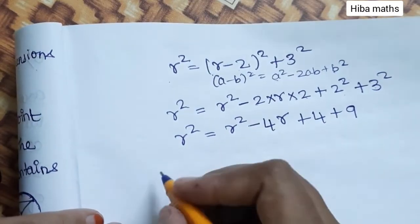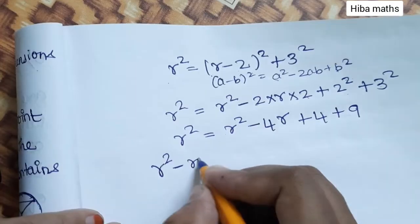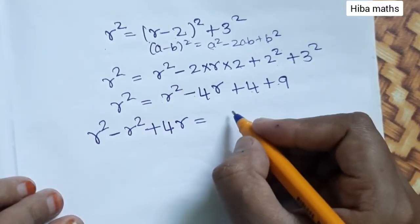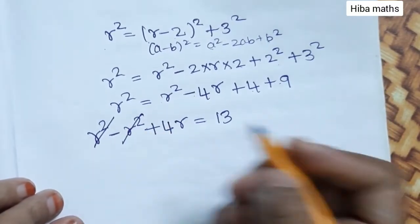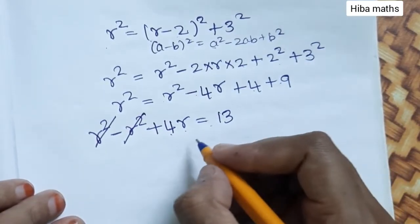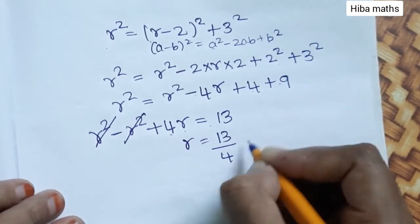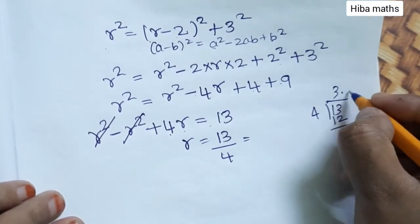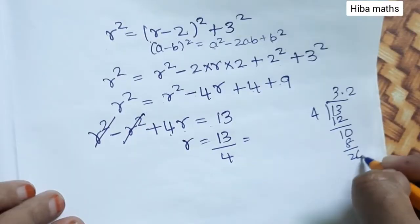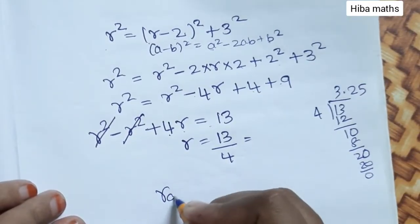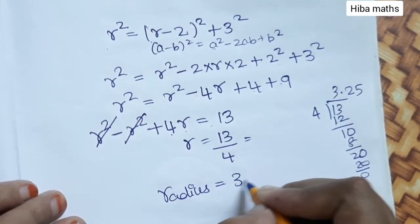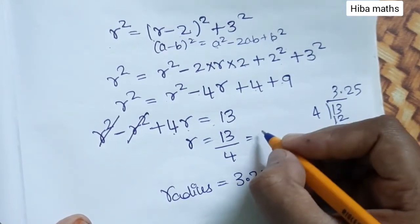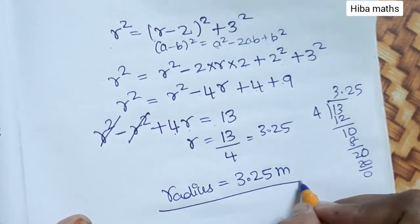Simplifying: R² cancels on both sides, giving 4R equals 13. Dividing: R equals 13 divided by 4, which equals 3.25 meter. So the radius value is 3.25 meter.